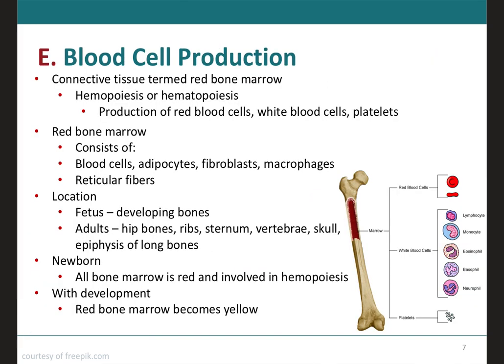Within certain bones, there is a connective tissue called red bone marrow, located inside the bone in a cavity called the medullary cavity. The red bone marrow produces red blood cells, white blood cells, and platelets in a process called hemopoiesis. Hemo means blood and poiesis means making. The red bone marrow consists of developing blood cells, adipocytes, fibroblasts, and macrophages scattered in a network of reticular fibers.